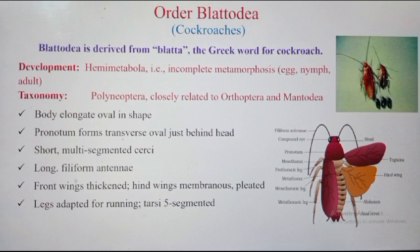The next characteristic is short multi-segmented cerci. Cerci are paired appendages on the abdomen of most insects. They also have long filiform antennae.